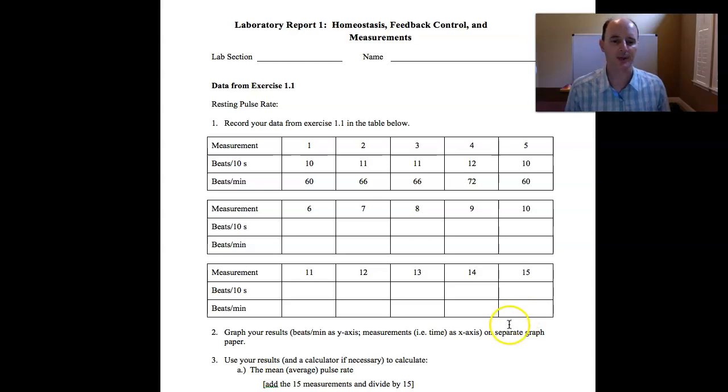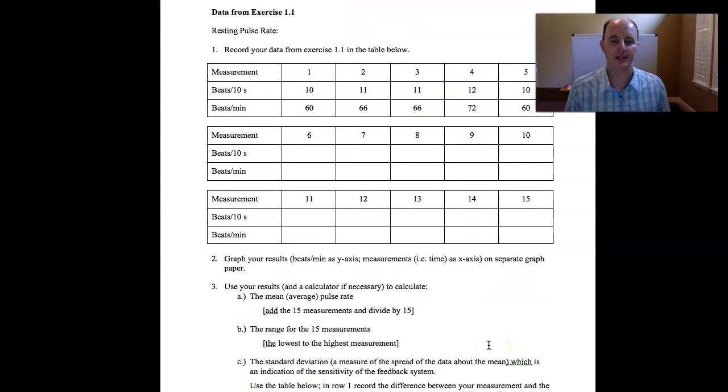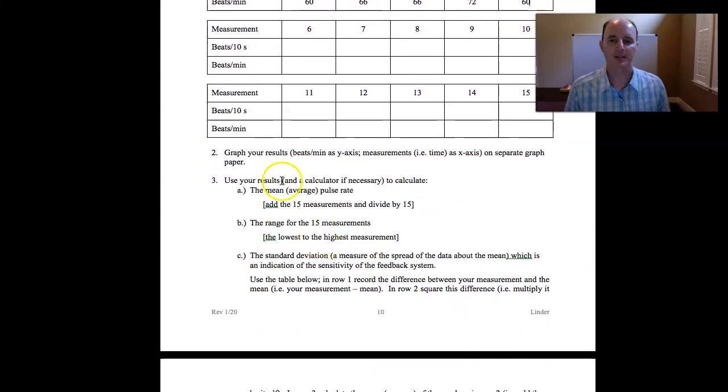Once you have your data recorded, then you can start analyzing your data. The second part says to graph your results. Make sure that you're graphing the beats per minute, not the beats in 10 seconds. Now we're going to use beats per minute data from now on. So you're going to graph your beats per minute. That'll go on your y-axis. Your y-axis is the vertical axis. And then number of measurements, or essentially time, is your x-axis, and that'll be your horizontal axis on your graph. So you take some graph paper and make a y-axis and an x-axis.